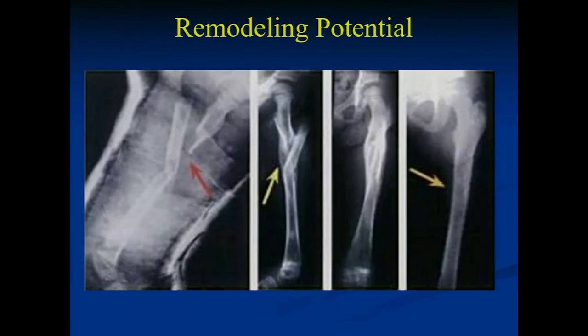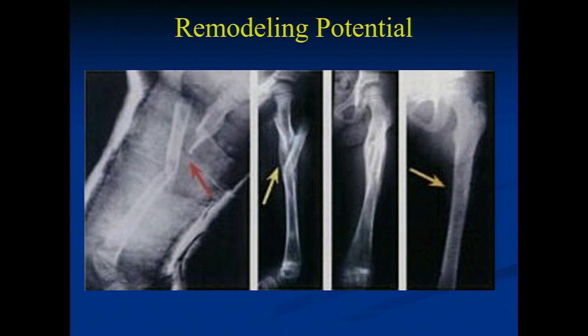The great thing about kids is that bones remodel. Looking at that X-ray on the left, we did nothing and the bone straightened out on the right — that's pediatric orthopedics. As long as the bones are in the same room, they will heal. That's why I went into peds. The body will continuously remodel over three months, so we can avoid surgery and have great healing potential — we have a little more leeway than with adults.